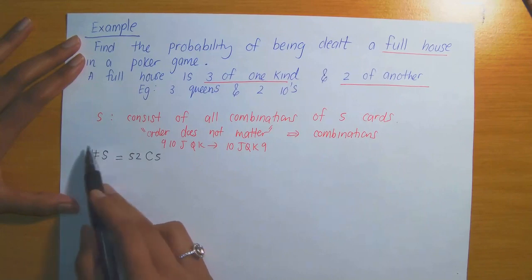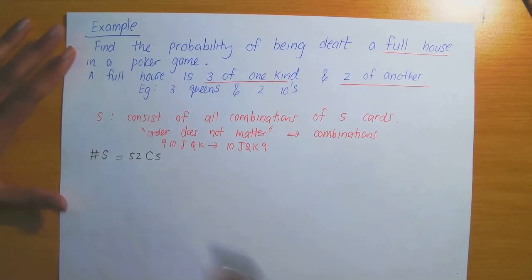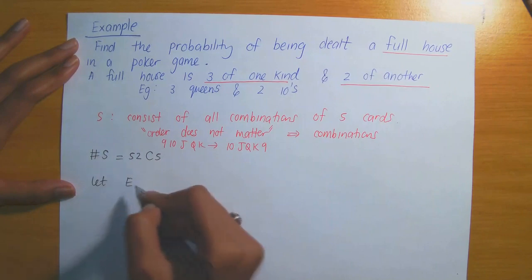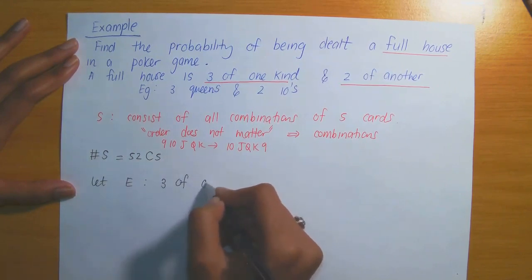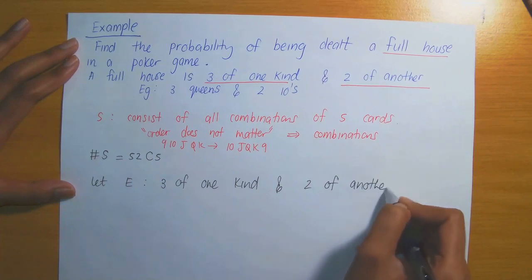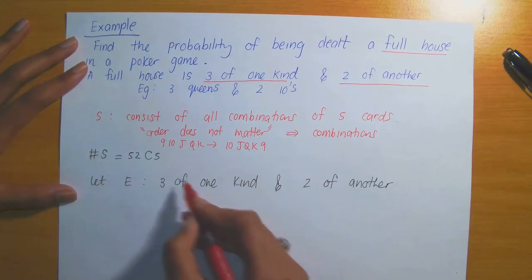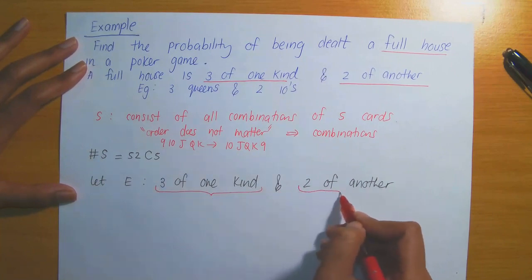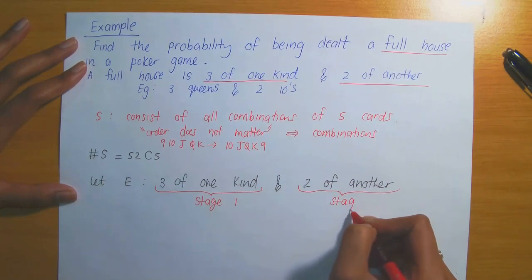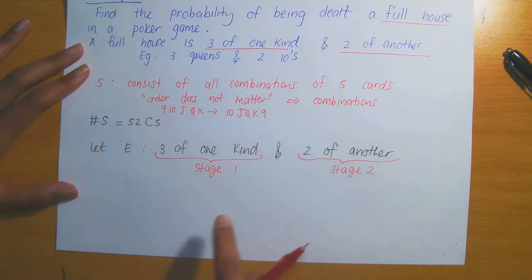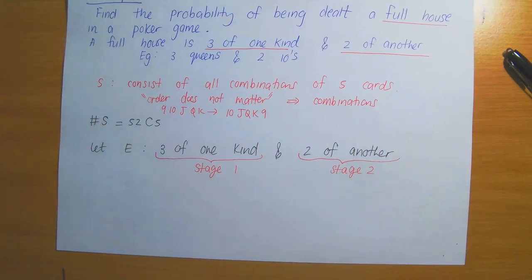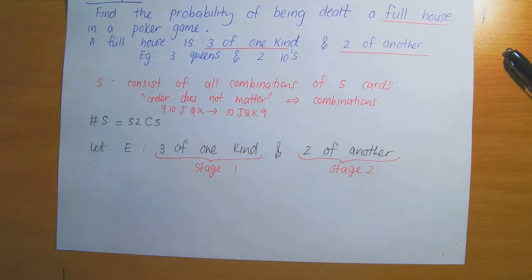We now want to compute the probability of event E — having 3 of one kind and 2 of another. We can split this into two stages: Stage 1 is picking 3 of one kind, and Stage 2 is picking 2 of another kind. By the basic counting principle, we count the ways each stage occurs and multiply them together.